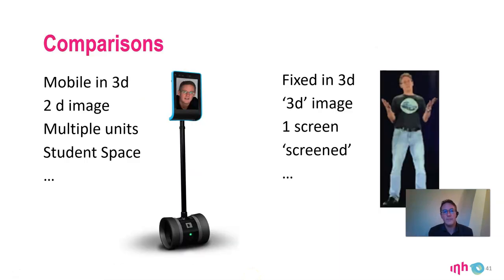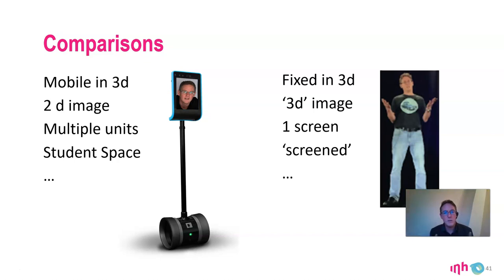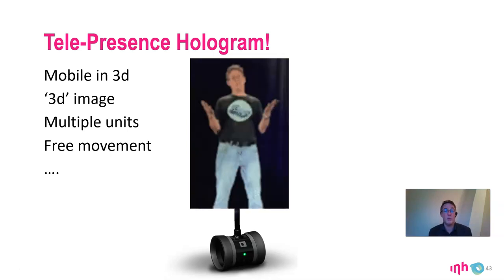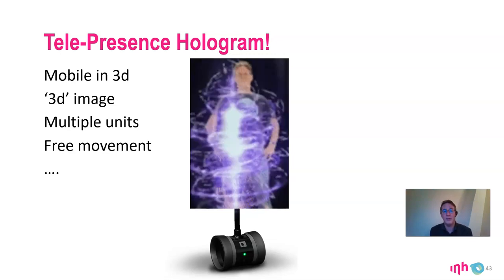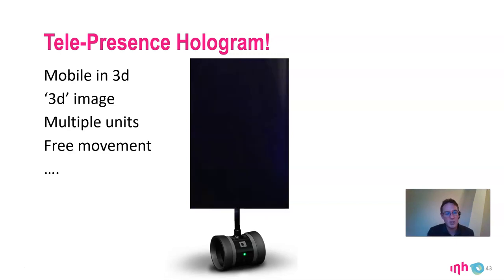What does this mean when we teach in the next dimension? Comparing the two formats: the Segway device is mobile in 3D, it can move around a physical space, the image is flat, and you can have multiple units interacting, moving into the student space. The hologram is fixed in a 3D space, can't move around, but the image appears three-dimensional — projected onto a screen. Perhaps we could take it to the next step: make the telepresence hologram — put the hologram on Segway wheels, so it's mobile in 3D space with a 3D image and multiple units moving freely.